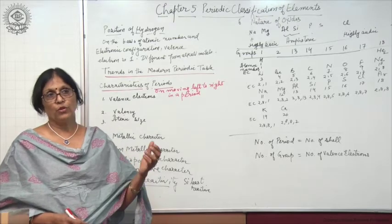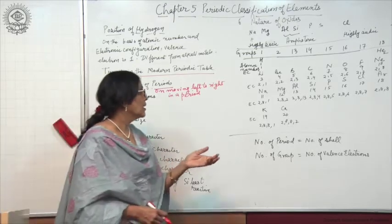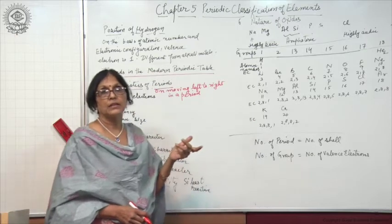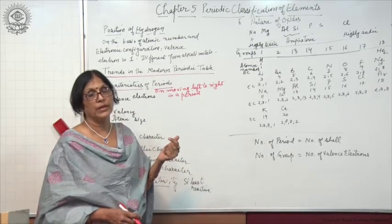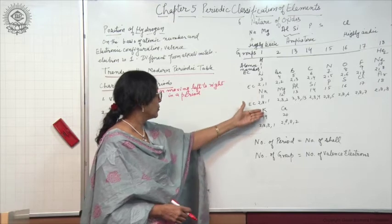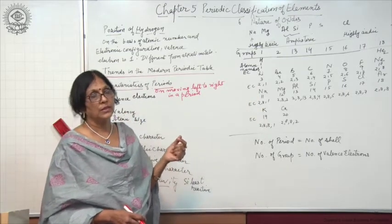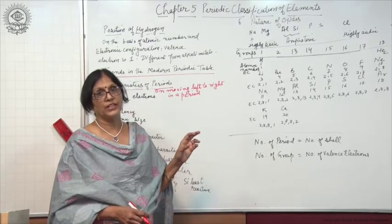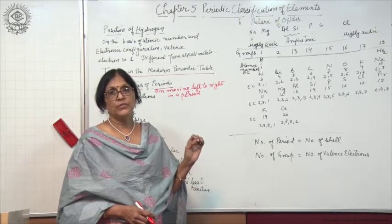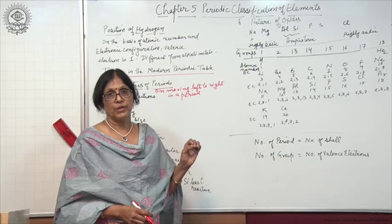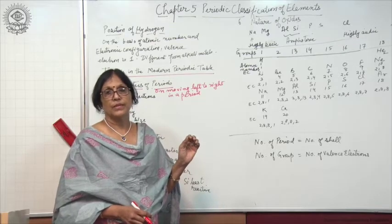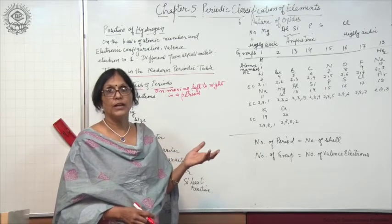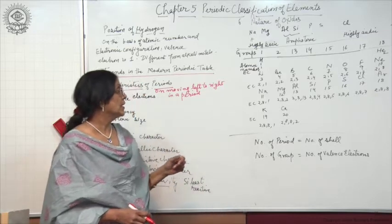By knowing the number of valency electrons — the number of electrons in the outermost shell — we can determine the chemical properties of the element. From the valency electrons we come to know the valency, and we can determine whether a particular element is a metal or a non-metal, whether it is more reactive or less reactive. So atomic number gives an idea of the chemical properties of metals and non-metals.